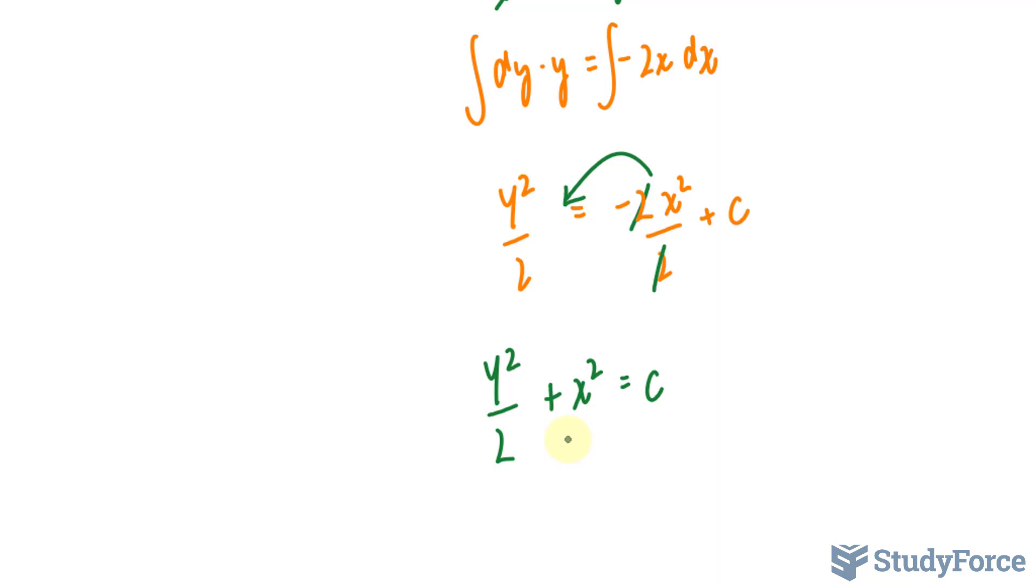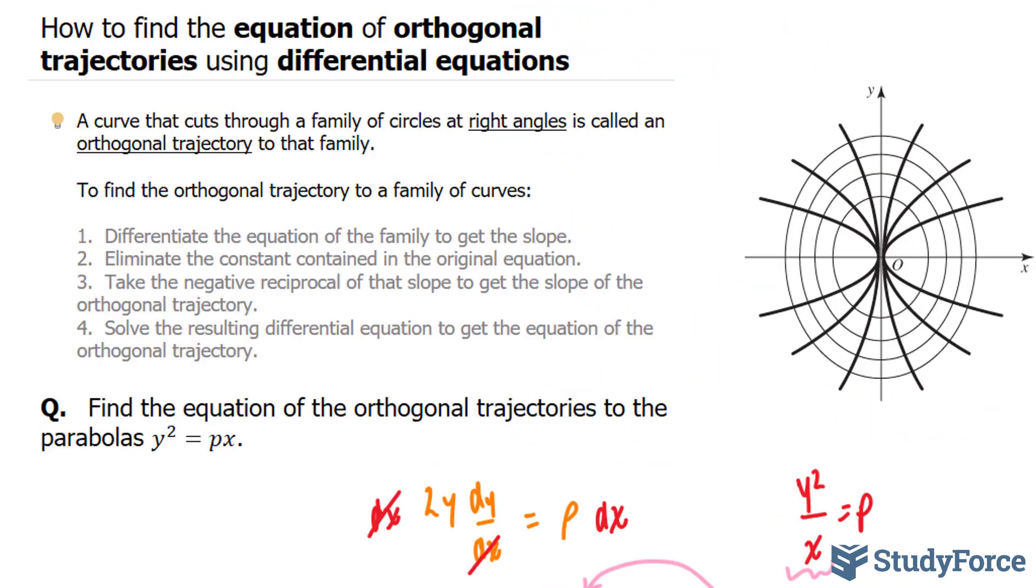And the equation that you see right here represents the family of ellipses. And there you have it. That is how to find the equation of orthogonal trajectories using differential equations.